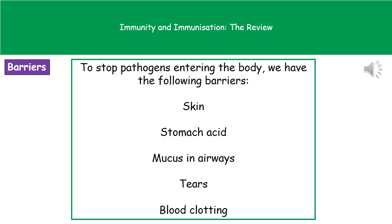If we're ingesting things, we've got stomach acid which will kill any microbes that get there. We've got mucus that lines our airways, which will trap microbes and prevent them getting deeper into our respiratory system. We've got tears that contain enzymes to break down anything that gets onto the surface of our eyes. And if we cut ourselves, our blood has the ability to clot to seal the wound and prevent any microbes getting inside us.